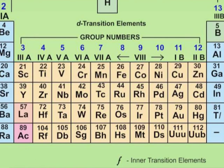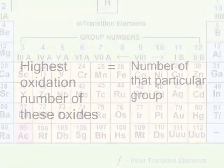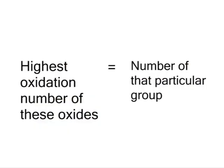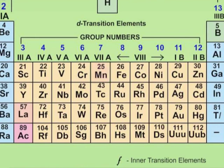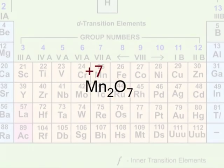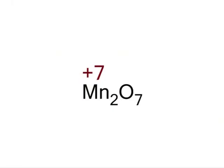Generally, it is seen that the highest oxidation state of these oxides may be equal to the group number of that particular element. For example, manganese is present in group 7 and its highest oxidation number is plus 7, found in Mn₂O₇.